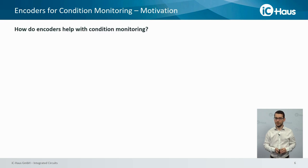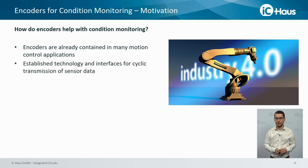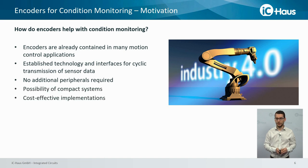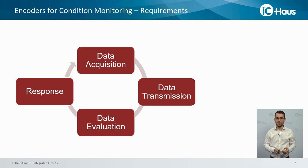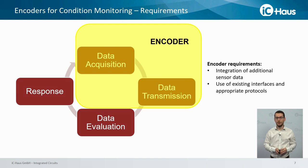How do encoders help with condition monitoring? Encoders are already contained in many motion control applications. They offer an established technology and interfaces for cyclic transmission of sensor data. Therefore no additional peripherals are required, which allows designing compact and cost-effective systems. Within the condition monitoring concept, encoders take care of the data acquisition and data transmission, so they have to be able to integrate additional sensor data using existing interfaces and appropriate protocols.